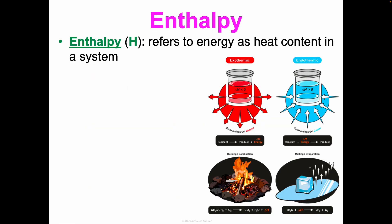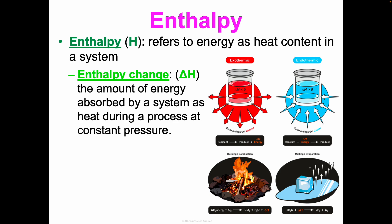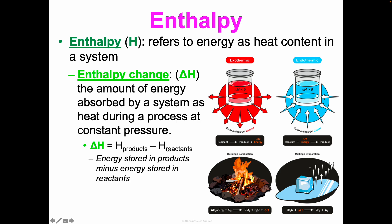Enthalpy is represented by a capital H and refers to energy as heat content in a system. We can't directly measure enthalpy, so what we measure is delta H — the enthalpy change — which is the amount of energy absorbed by a system as heat during a process at constant pressure. If delta H is positive, energy was absorbed and it's endothermic; the thermochemical equation would show reactants plus energy yielding products. If negative, energy was released and it's exothermic; the equation shows reactants yielding products plus energy. Delta H equals H of products minus H of reactants.